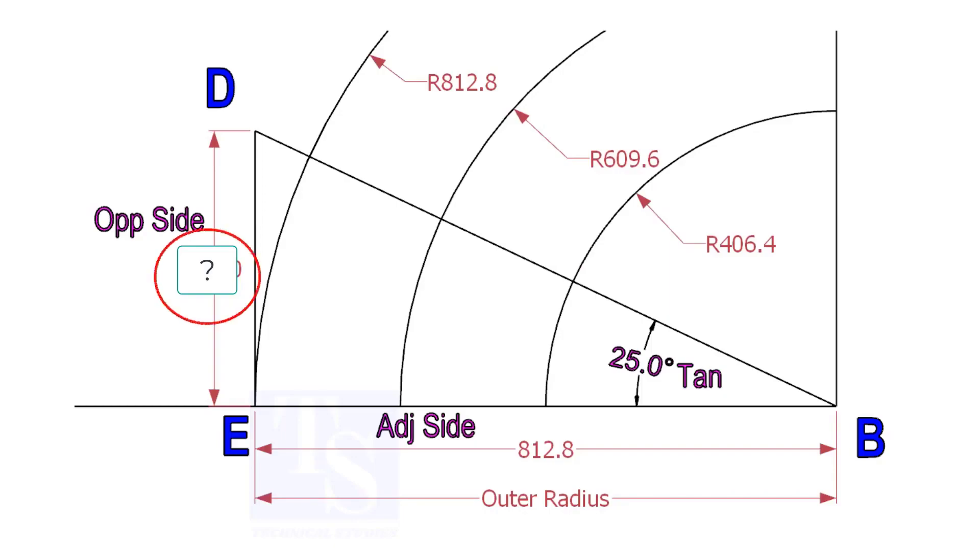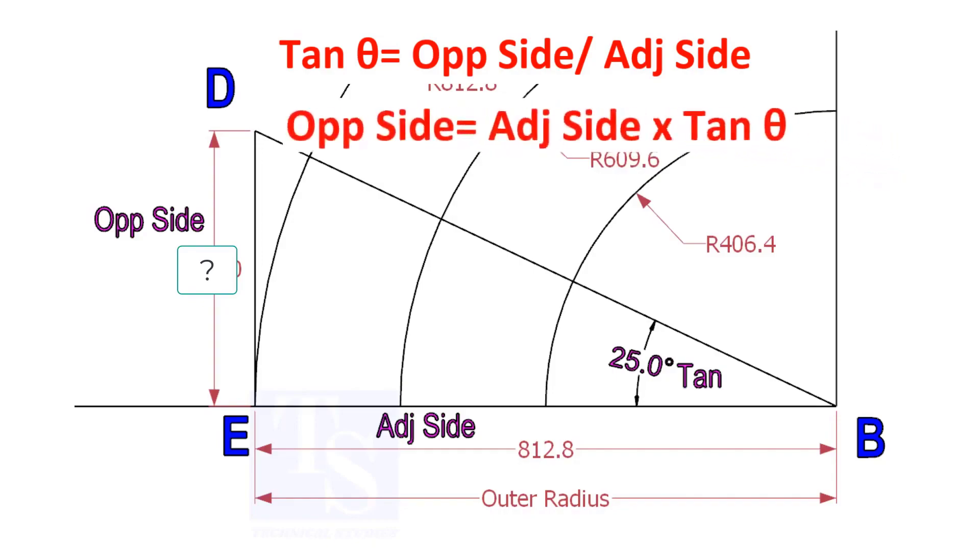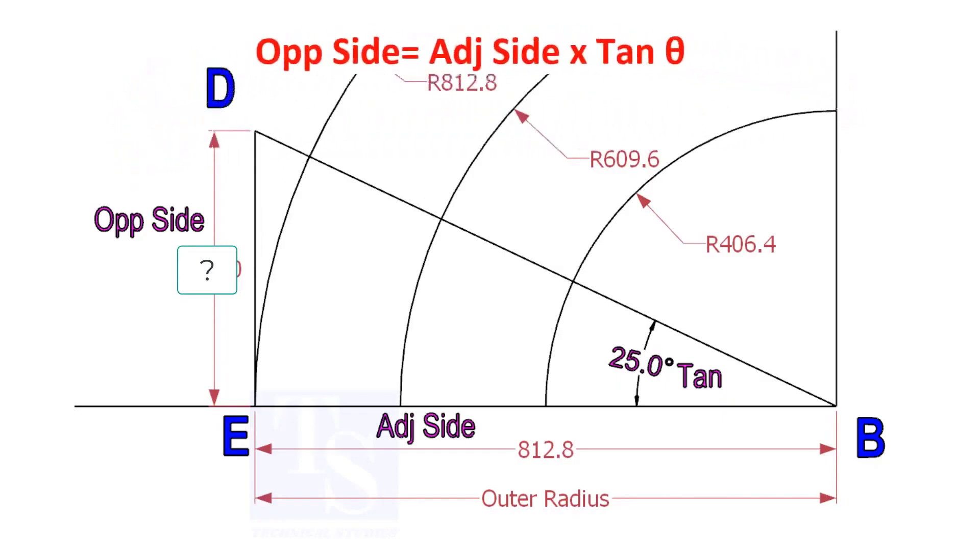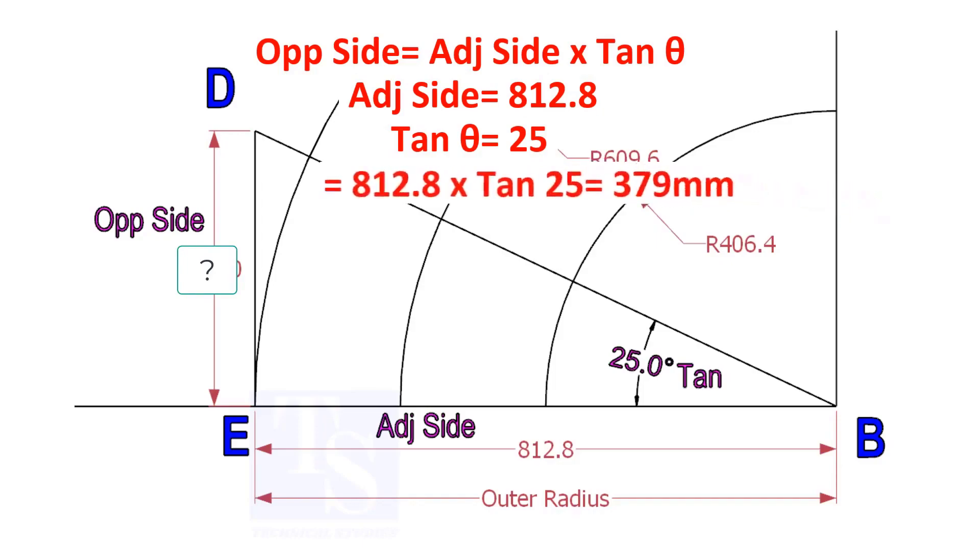To calculate ED, we need to apply the formula: tan theta equals opposite side divided by adjacent side. Opposite side equals adjacent side multiplied by tan theta. 812.8 into tan 25 equals 379 millimeters.